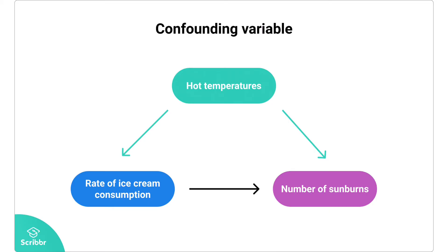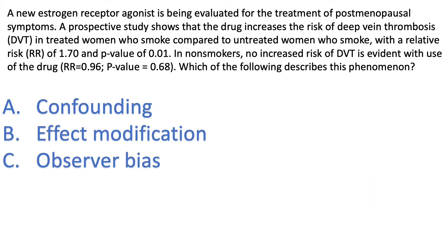With confounding, there is no true association — it's a false association, and it will be eliminated if we match the subjects or stratify by the confounding variable. This will become a lot clearer when we look at another example, which is effect modification.